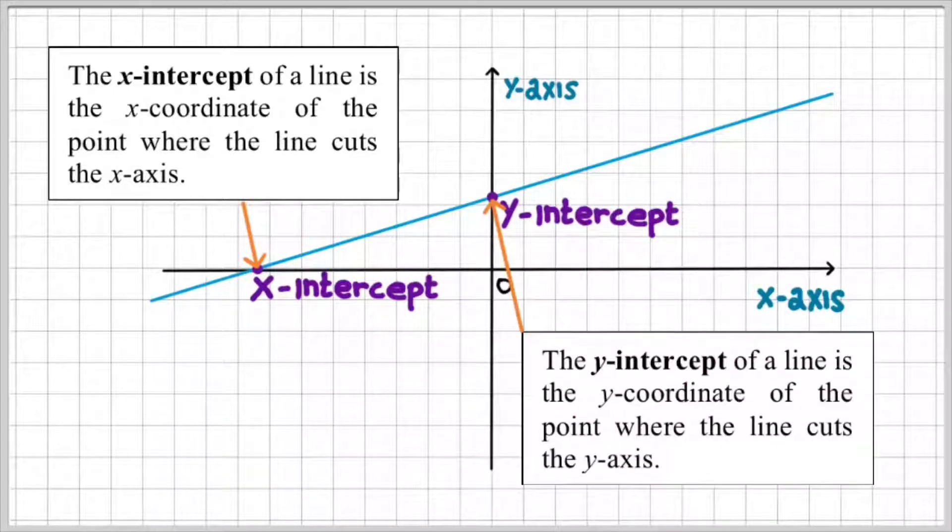Likewise, the y-intercept of a line is the y-coordinate of the point where the line cuts the y-axis. So as this straight line cuts through the y-axis, the y-coordinate of the point where the line cuts the y-axis is called the y-intercept.